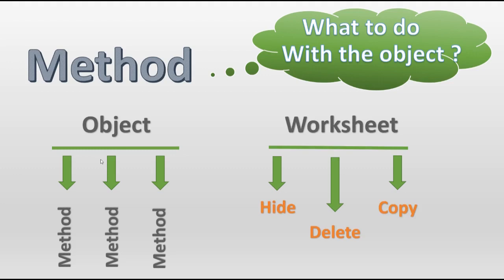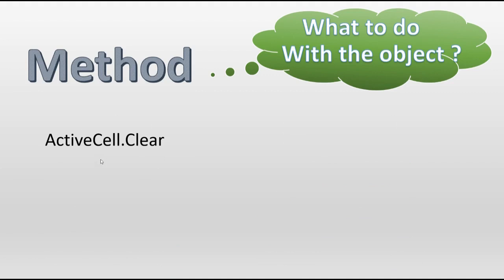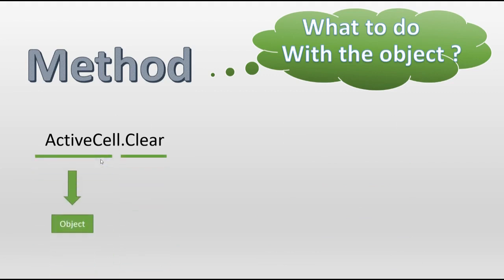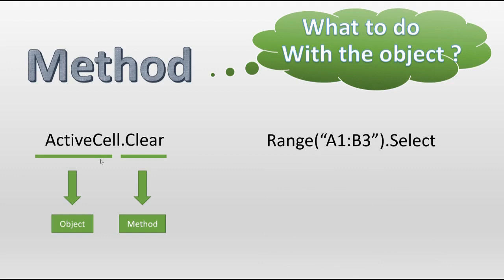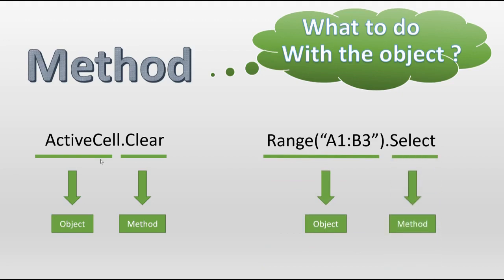We can hide a worksheet, delete a worksheet, or copy a worksheet. For example, ActiveCell.Clear — ActiveCell is the object and Clear is the method. Likewise, Range.Select — Range is the object and Select is the method.